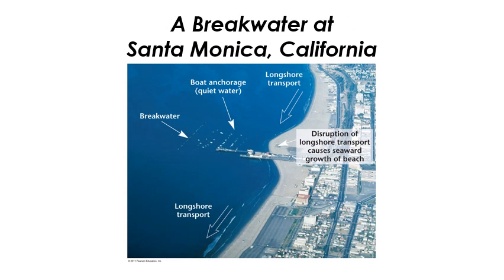Another way to change beach dynamics is to build a breakwater — a big pile of rock or concrete placed out there parallel to the shoreline, like this one at Santa Monica, California. That creates calm water behind it for a nice anchorage for boats, blocking the breakers. But it weakens longshore drift in that area, so a lot of the beach grows out toward the breakwater as waves drop their sediment. Further down the coast, more longshore drift can cause the beach to narrow.